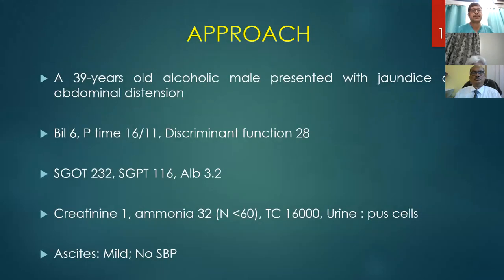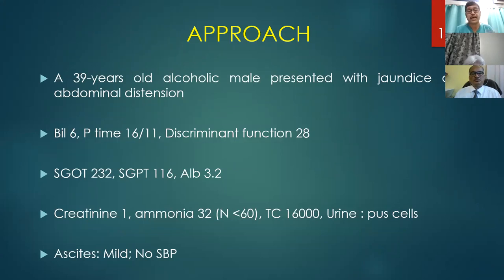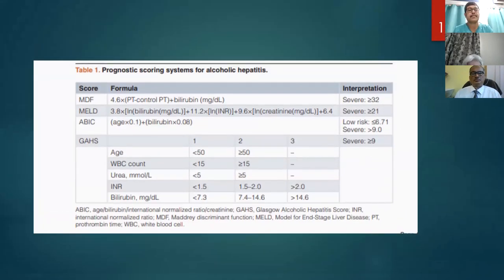Coming back to the patient — bilirubin of 6, PT of 16, INR around 1.4, giving a discriminant function of 28. SGOT and SGPT both raised but less than 400. Albumin marginally low at 3.2, creatinine normal, ammonia normal. There was leukocytosis and urine showed pus cells. Ascites was present clinically and on ultrasonography, but there was no infection of the ascitic fluid on aspiration.